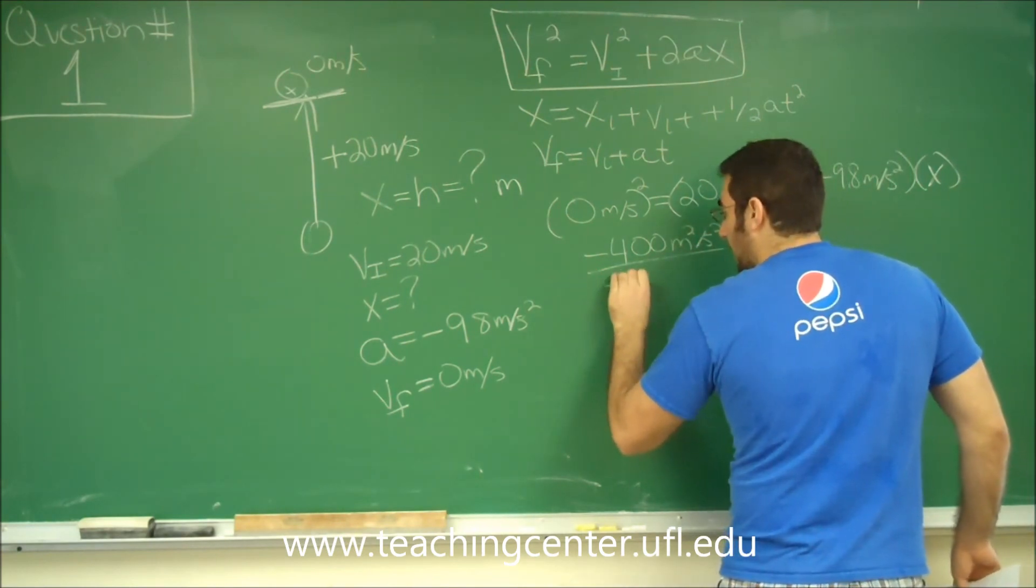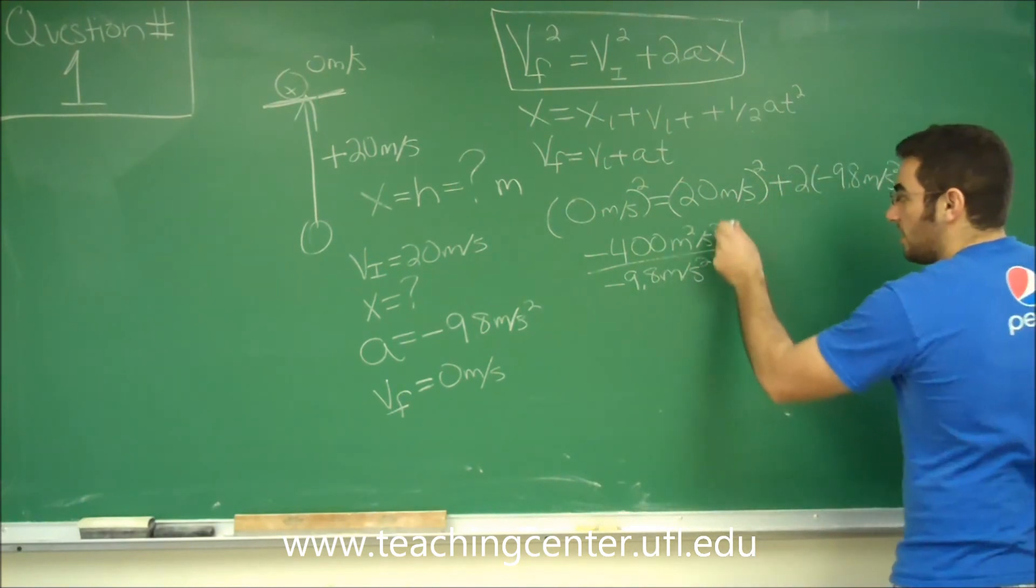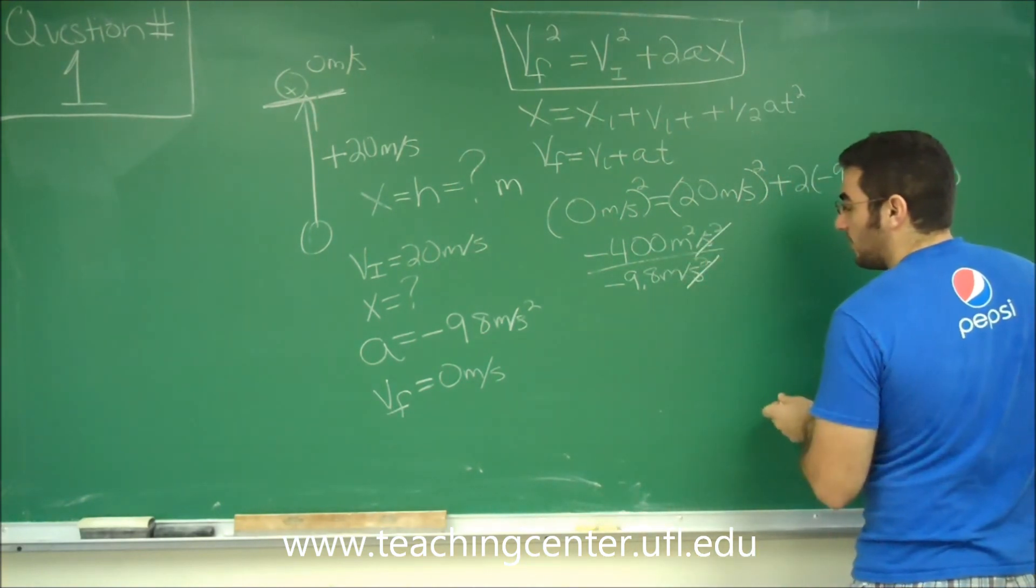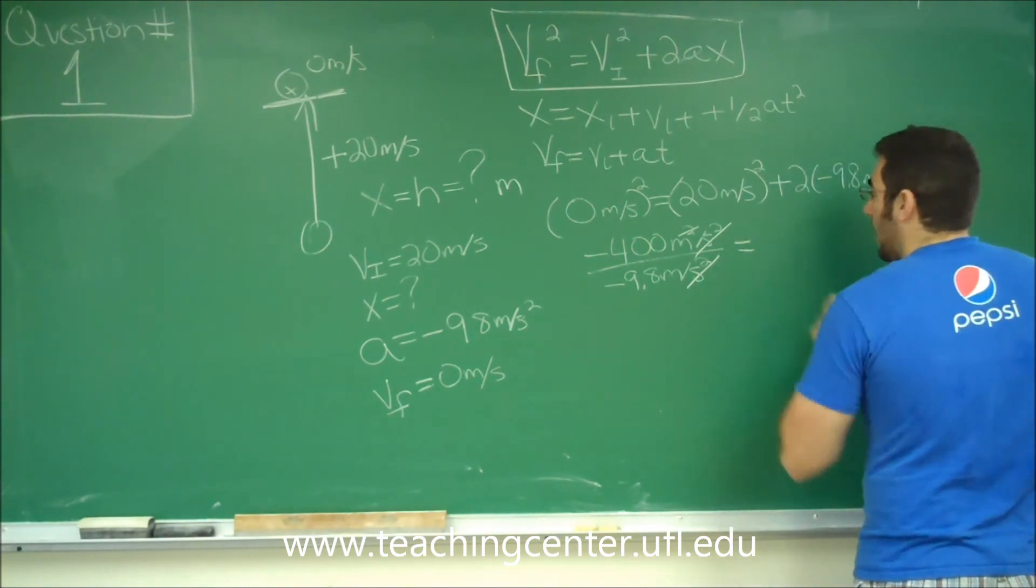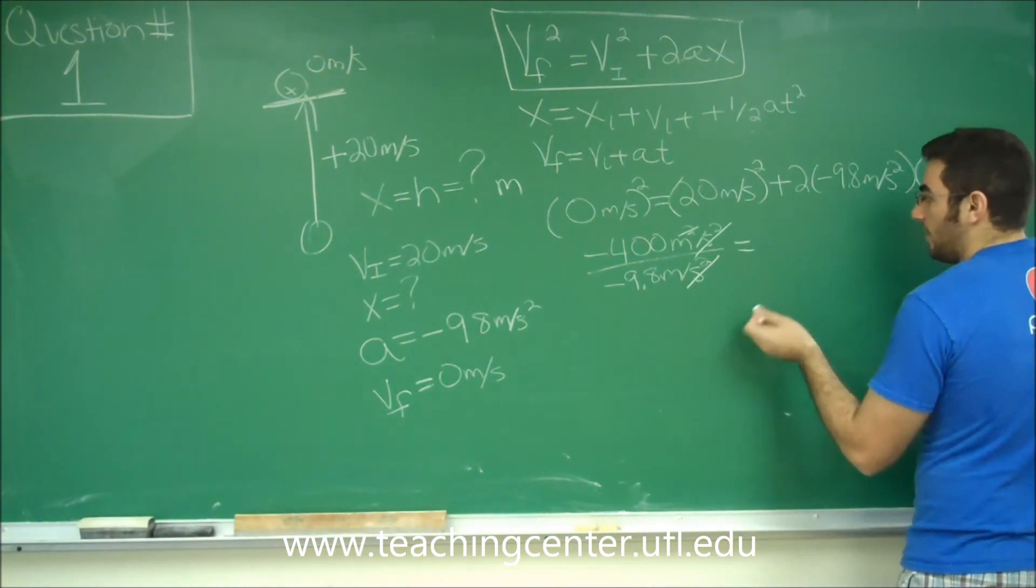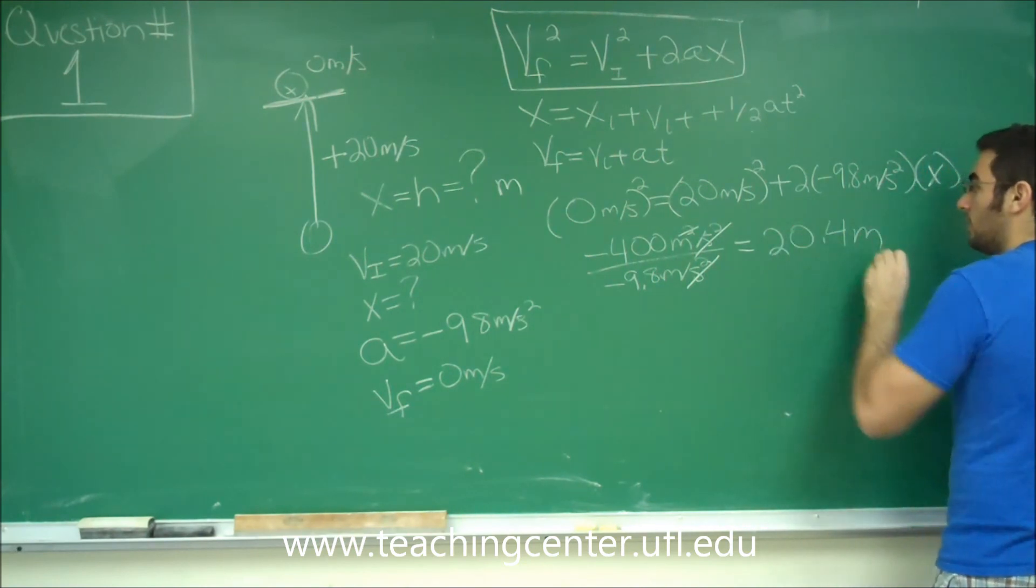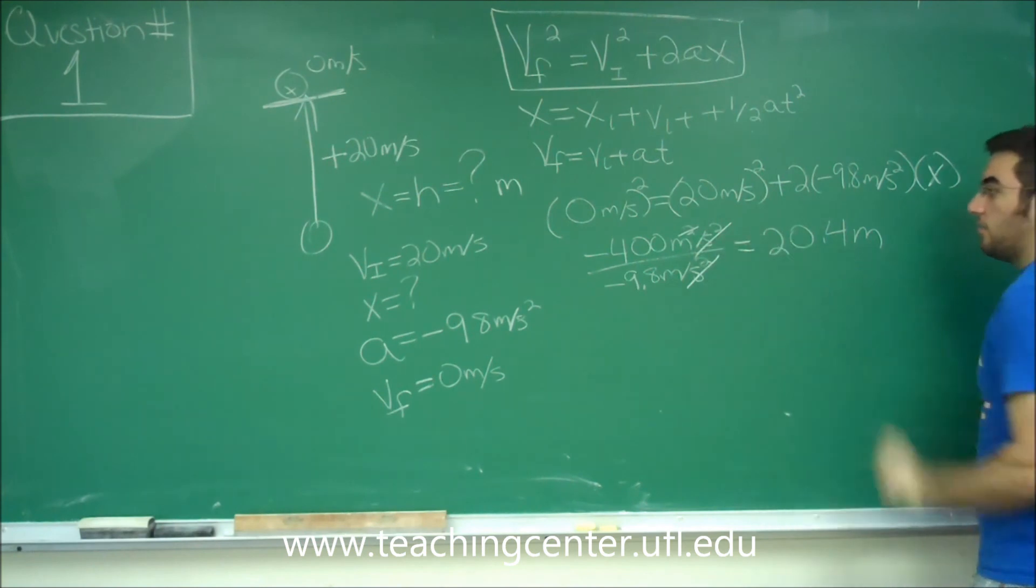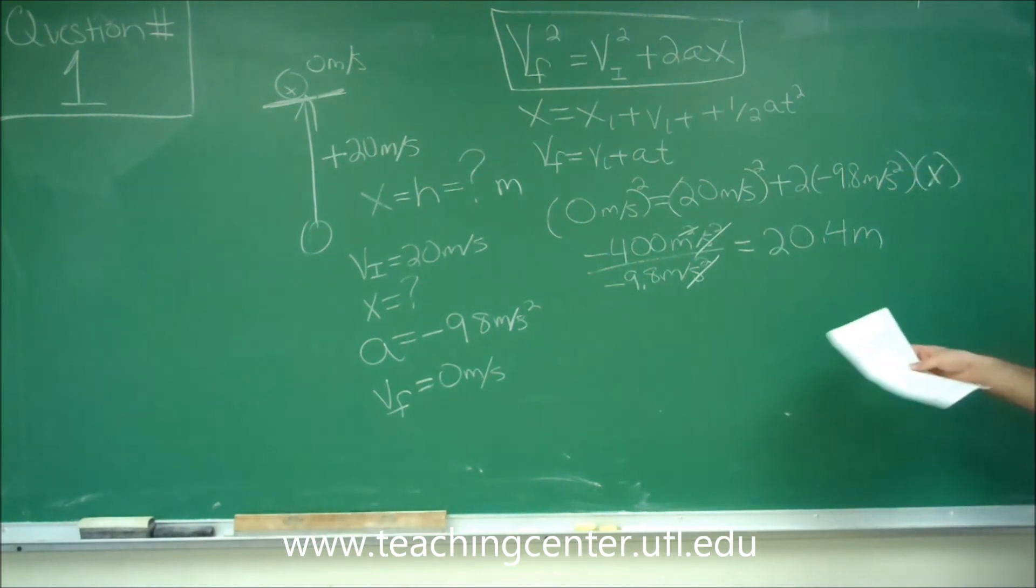We can see that the units cross out here. Second squared cross out, and the meters is going to cross out. And we are going to get a final distance of 20.4 meters. And we can see our units cross out and our negative signs cross out. So the answer choice for question number one is A, 20.4 meters.